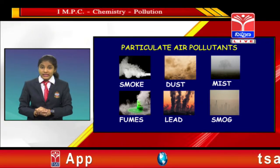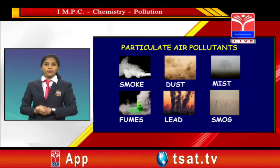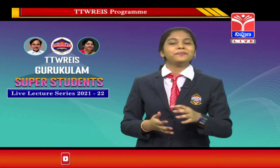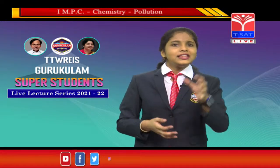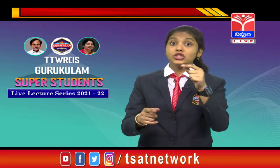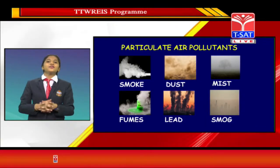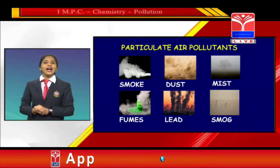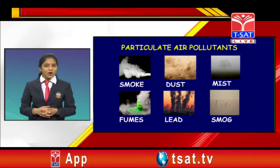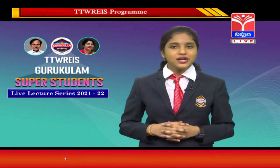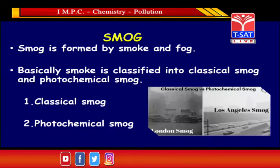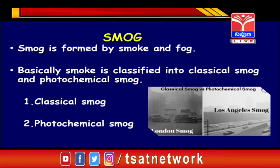Apart from these four particulate air pollutants, there are two other main air pollutants: lead and smog. Lead is produced by vehicles using leaded petrol and damages the maturation and development of red blood cells in human beings. This is why most cities in India have banned leaded petrol. Smog is generally the formation of smoke and fog, classified into two types: classical smog and photochemical smog.